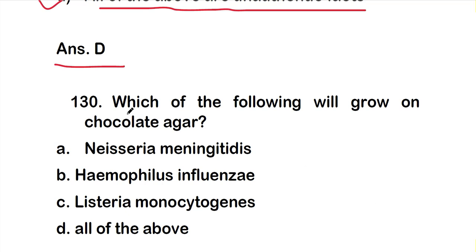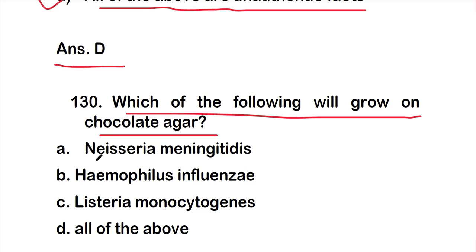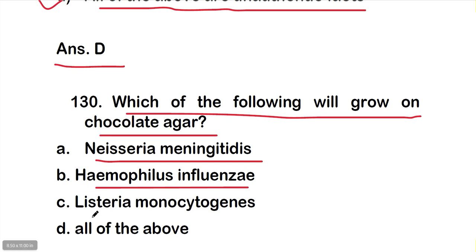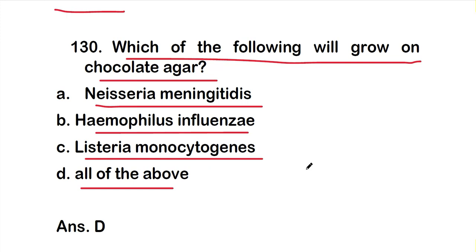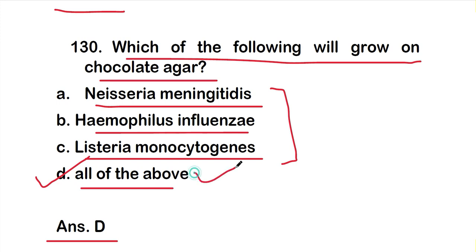The last question: Which of the following will grow on chocolate agar? Option A: Neisseria meningitidis, Option B: Haemophilus influenzae, Option C: Listeria monocytogenes, or Option D: all of the above. The right answer is Option D — all of the above. Neisseria meningitidis, Haemophilus influenzae, and Listeria monocytogenes all grow on chocolate agar. These are all the MCQs on microbial culture media. Thank you for watching.